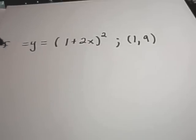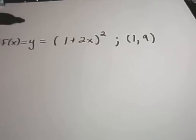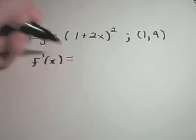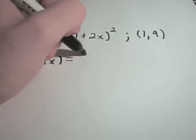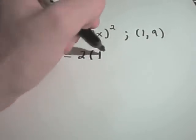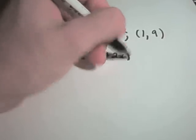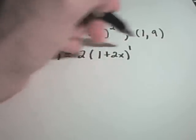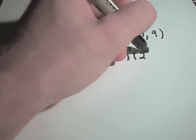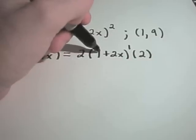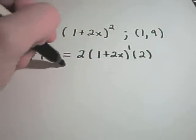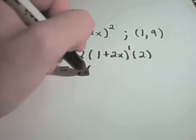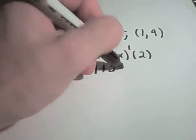Rewriting as f prime of x, we're going to have to use the chain rule. The 2 comes out front, we leave the inside stuff alone and take 1 away from the power, then multiply by the derivative of the inside. The derivative of 1 is 0 and the derivative of 2x is 2. Multiplying 2 and 2 gives 4, with (1 plus 2x) remaining.